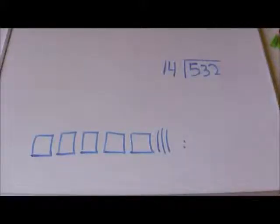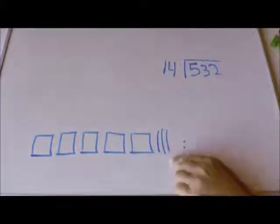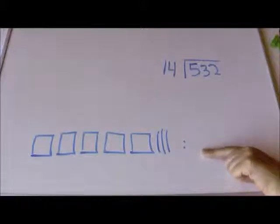Okay, this problem is 532 divided by 14, so I have five hundreds, three tens, and two ones here. And I want to make a rectangle with 14 on one side.